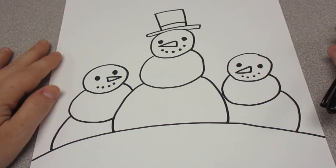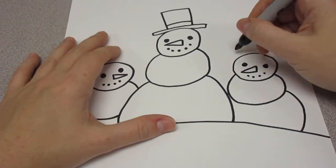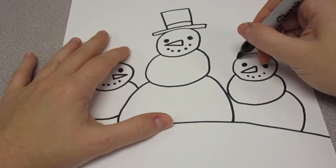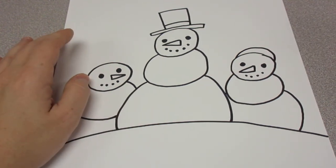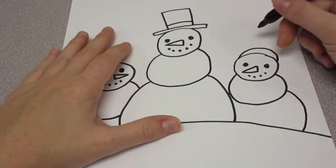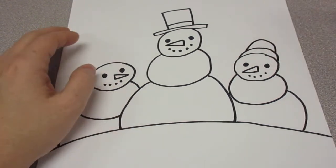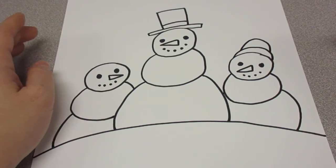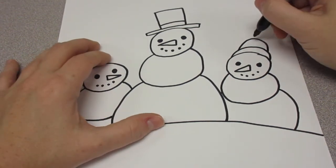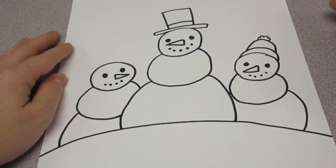Let's see, let's give one of these a winter hat. How about this one? This guy, we're going to put a curve. A winter hat. And then an upside down U. And that's a little puff ball. He's got a winter hat.